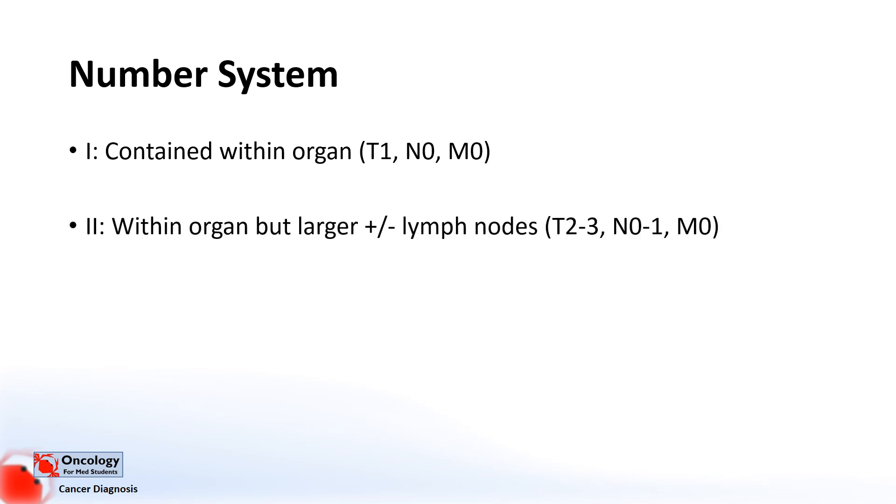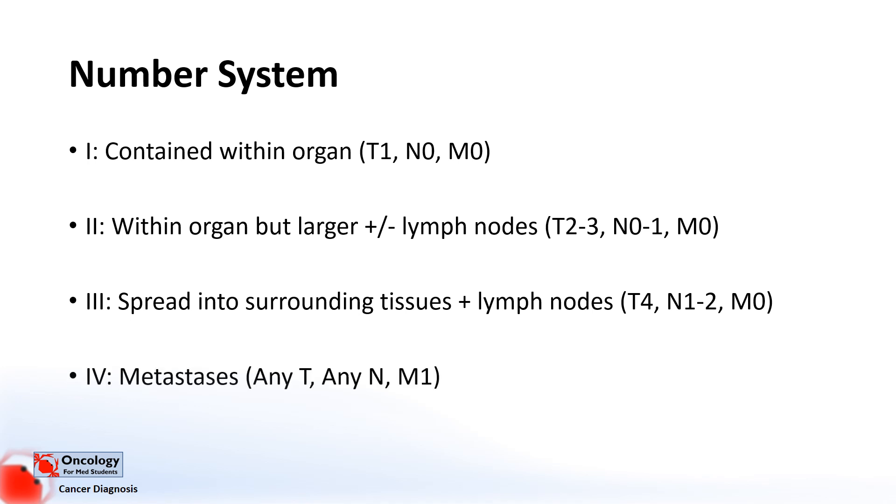A stage 2 would be still within the organ, but larger, with or without lymph nodes. A stage 3 cancer would be one that's spread to surrounding tissues and lymph nodes, but hasn't metastasized. And a stage 4 cancer is any cancer that has metastasized.